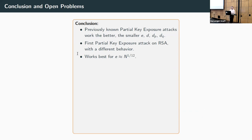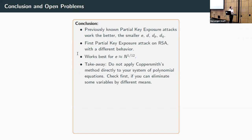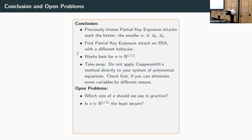To conclude: all previously known partial key exposure attacks work better the smaller the RSA parameters get. We introduce the first partial key exposure attack with a completely different behavior — first working better as parameters get larger, then reverting to the old behavior — with the best point at e = N^(1/12). The key technical takeaway is that one should not apply Coppersmith's method directly to a system of equations; a two-step approach that first eliminates some variables seems much more effective.